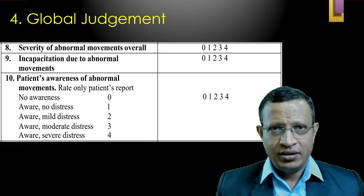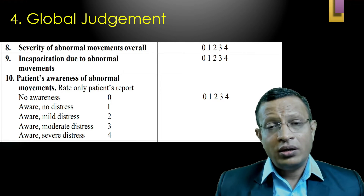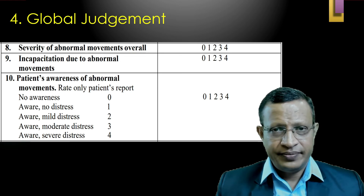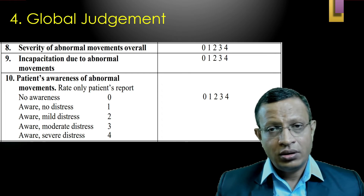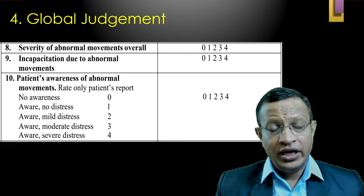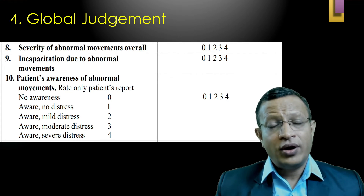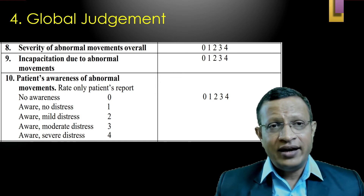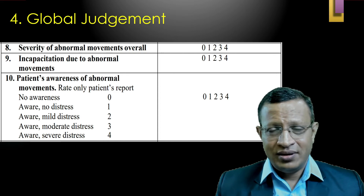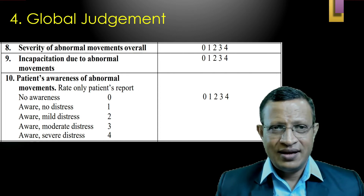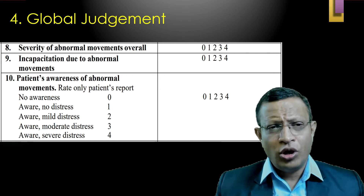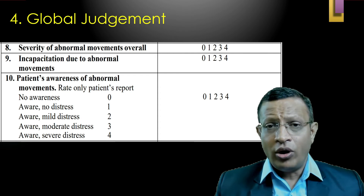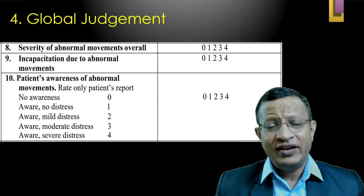Finally, you move to the global judgment section. Item 8: code for overall severity of movement — encompassing perioral, periorbital, neck, and thorax. Item 9: how much it is incapacitating the patient with regard to daily activities. Item 10: assess awareness — whether the patient is aware of these abnormal movements and whether distressed. No distress is coded 1, mild distress is 2, moderate distress is 3, and severe distress is 4.